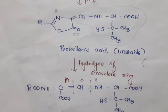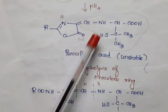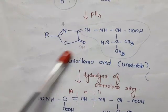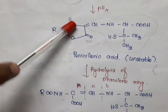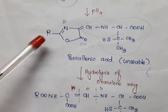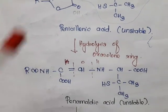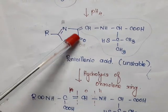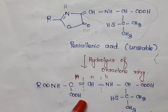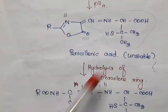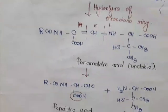Since penicillinic acid is unstable, it undergoes hydrolysis. This ring formed is called an oxazole ring (with the ketone). The oxazole ring undergoes hydrolysis: H is added with the nitrogen and OH is added with the ketone. So we get RCONH, then C-COOH, C-COOH with the same double bond remaining. This is called penamaldic acid, which is also an unstable compound.